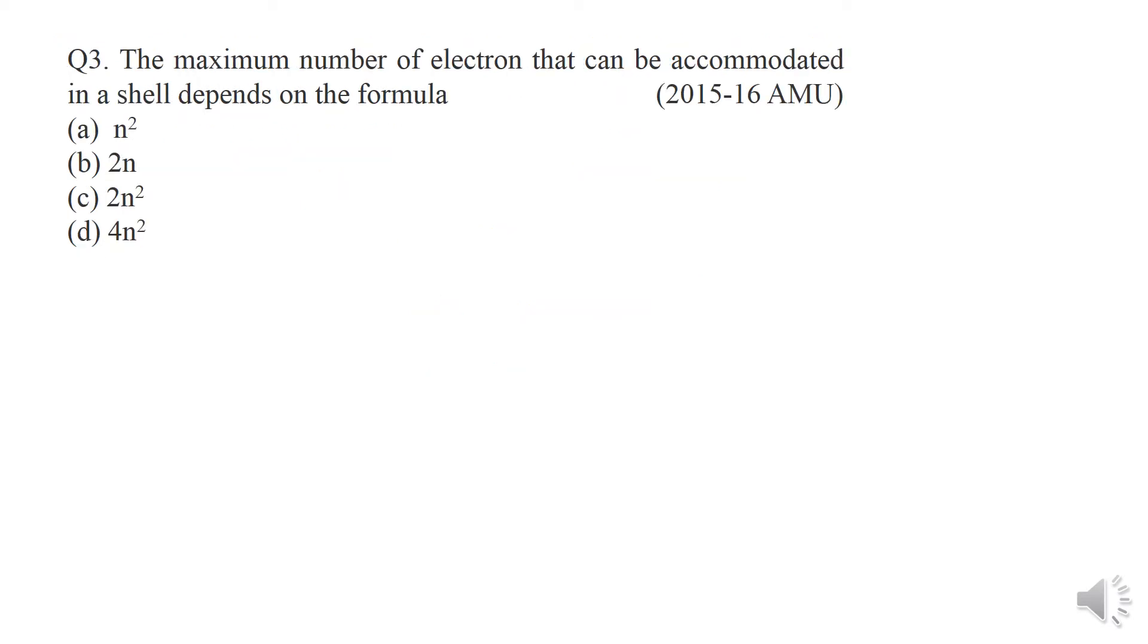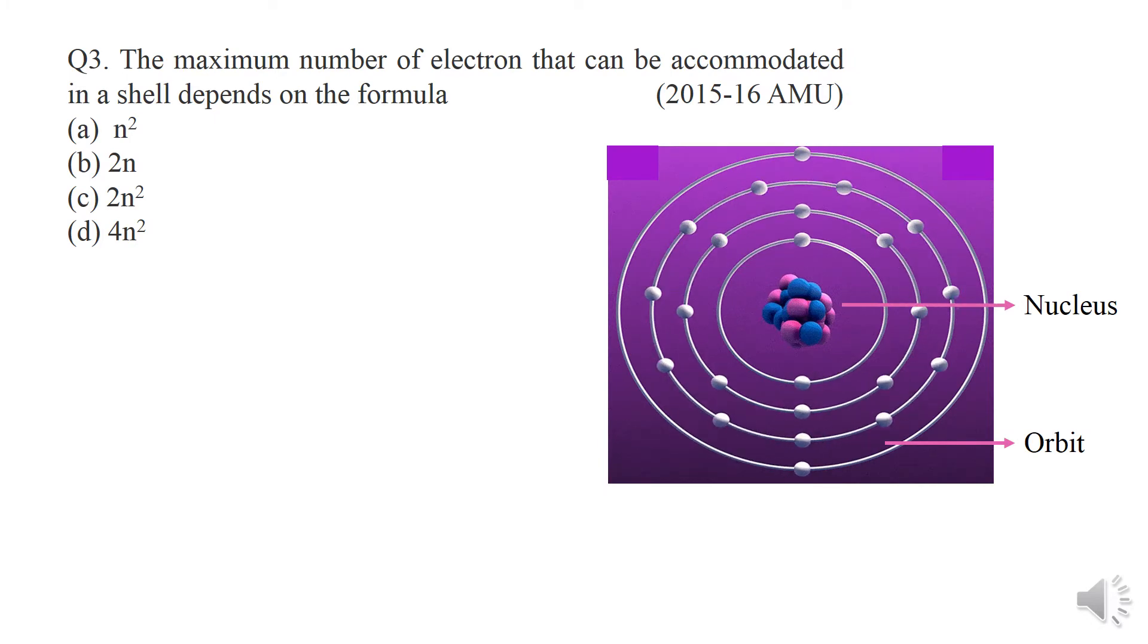Question number three: the maximum number of electrons that can be accommodated in a shell depends on the formula. Four options are given, you have to choose the correct answer. You studied in 9th class in Bohr atomic model that electrons revolve in fixed circular paths around the nucleus.